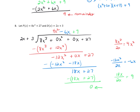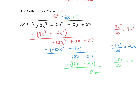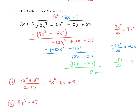We write our final answer two ways. The first way: 8x³ plus 27 divided by 2x plus 3 equals 4x² minus 6x plus 9. The second way: 8x³ plus 27 equals the product of 2x plus 3 times 4x² minus 6x plus 9. Since there was no remainder, the division is exact.